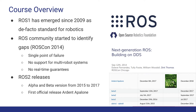ROS1 has emerged since 2009 and has been evolving as the de facto standard ecosystem for the development of all kinds of robotics applications, including mobile robots, robotics arms, unmanned aerial systems, and self-driving cars, and much more.